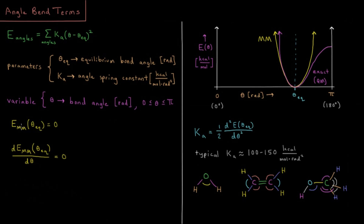If we are at the equilibrium bond angle, the energy is equal to zero, and the derivative of the energy at the equilibrium bond angle is also zero. It is only the second derivative that is the first non-zero term.